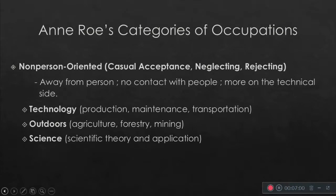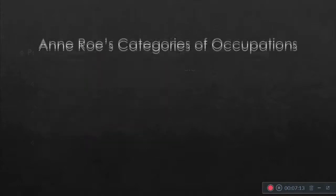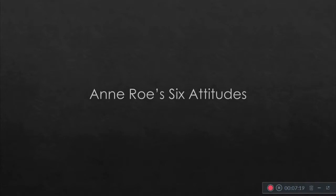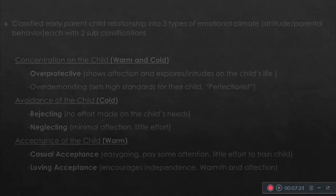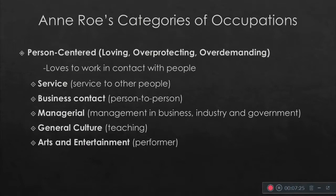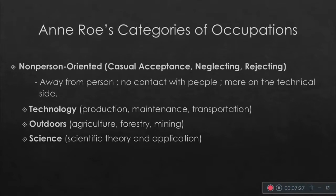Next would be non-person-oriented. If we base this on the discussion earlier, basing it on the six attitudes classifications — casual acceptance, neglecting, and rejecting — these parenting attitudes fall under this kind of category.